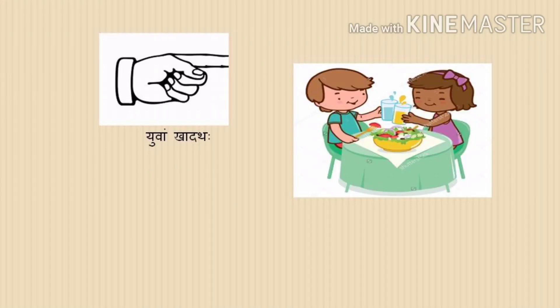In the same way you can make many Dvivachanam sentences: Yuvam Pathata, Yuvam Chalata, Yuvam Kreedatha, Yuvam Likhata, Yuvam Namata — and so on.